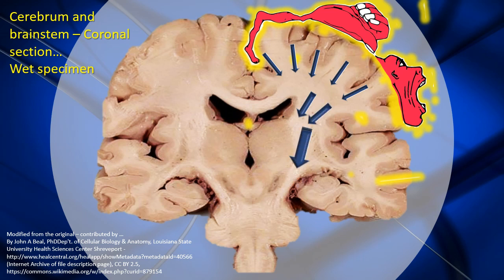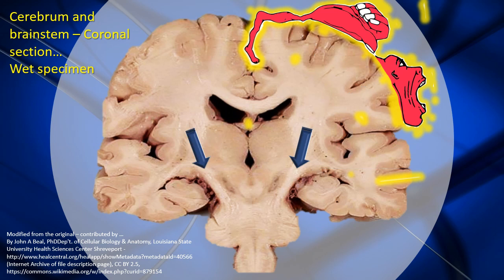The fibers merge into the corona radiata and from there go down into the lower part of the cerebrum, into the internal capsule. The internal capsule is located between the thalamus medially and the lentiform nucleus laterally. Particularly, it is the posterior limb of the internal capsule that carries these corticospinal fibers, with the thalamus medial to it and the lentiform nucleus lateral to it.